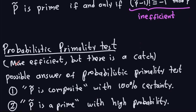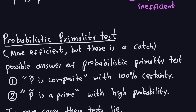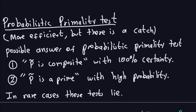Now let's talk about probabilistic primality tests. These are more efficient — they take fewer steps to compute — but there is a catch: the answer is not 100% guaranteed to be correct. That said, it's not a big deal because the probability of the test being wrong is really, really small.